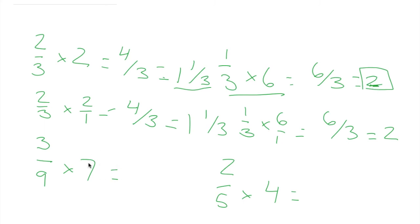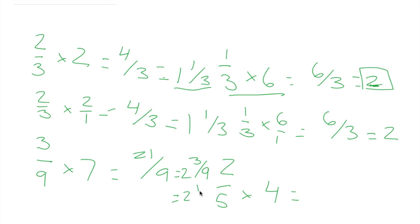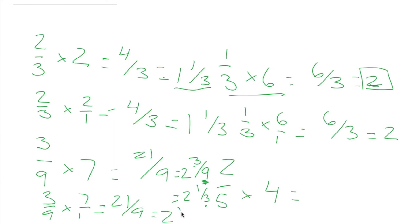Next: seven-ninths times three. Seven times three equals twenty-one, and the denominator is the same nine — but we have to simplify. Nine times two equals eighteen; twenty-one minus eighteen leaves a remainder of three-ninths. Three-ninths simplifies further because three times three equals nine, so three-ninths equals one-third. Our final answer is two and one-third. Using the clearer way: seven-ninths times three over one. Seven times three equals twenty-one, nine times one equals nine, simplify to get two and one-third.